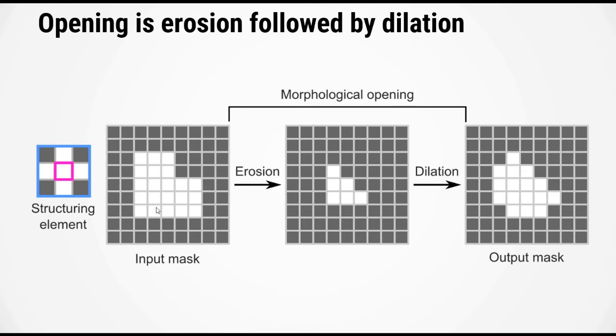The first step in an opening operation is erosion of the input mask with this structuring element and if you do so you will get this secondary mask in the middle. The next step is then to carry out dilation on the secondary mask using the same structuring element. You will then end up with an output mask that looks like this image on the right.